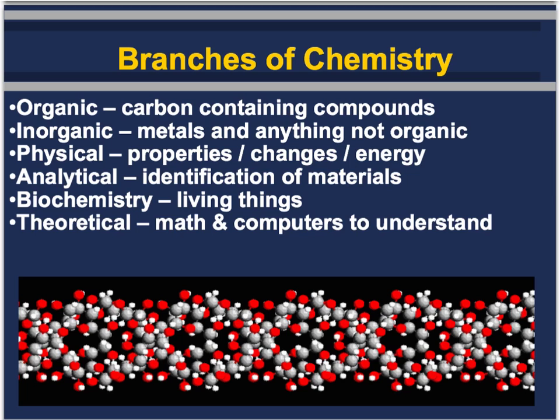Branches of chemistry. Chemistry can be divided into different areas: organic, inorganic, physical, analytical, biochemistry, and theoretical chemistry. Although chemistry is separated into these different areas, they definitely overlap. For example, if you're planning on being pre-med, you probably study biochemistry, but that does include analytical chemistry — checking blood sugars, blood levels — and you might also be studying organic and inorganic chemistry. So what types of iron or phosphorus does the person have? These areas overlap with each other.